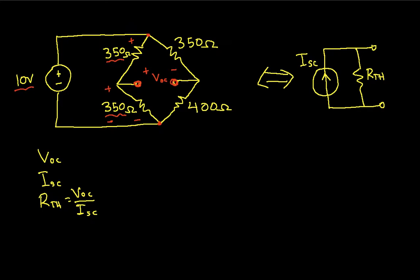And so I can use a voltage divider to get the voltage across this resistor here. And in fact, when I do that, let's call this V1. We have V1 is going to be 350 ohms over 350 ohms plus 350 ohms times 10 volts, which we work out to be 5 volts.